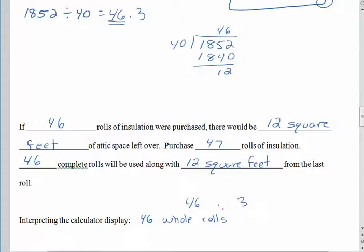It means we're going to use 46 whole rolls. And that's 46.3. I'm going to space this out just so we can see it a little bit. Remember when we were reading decimals, we read the decimal point as AND. And of course, this 3 is 3 tenths of the next roll. So the point 3 does not talk about square feet left over or square feet on a roll. It talks about 3 tenths of the next roll that we need to use.